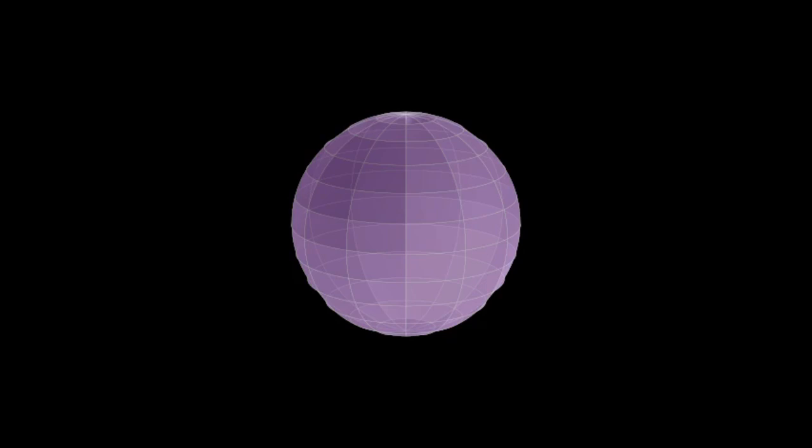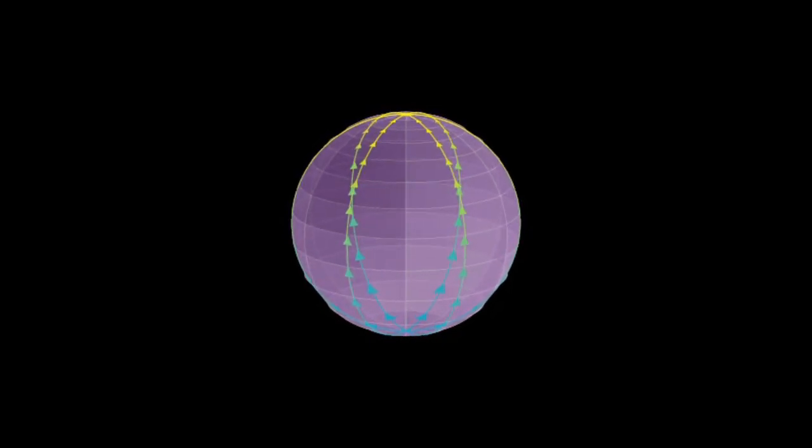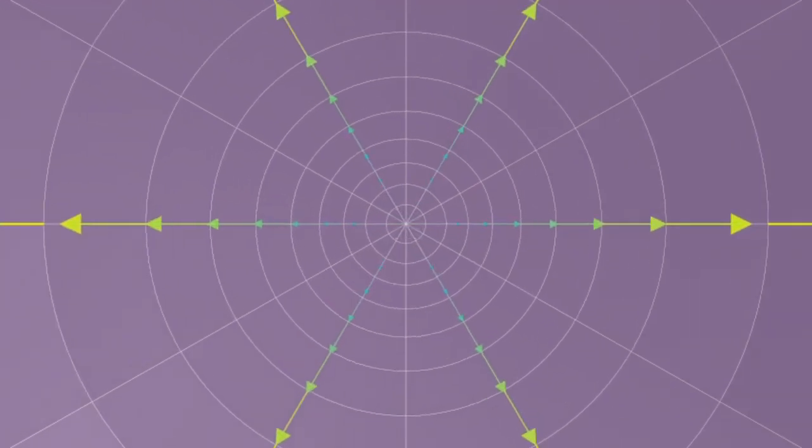For z-boosts, the orbits are lines going between the poles on the sphere, or on the complex plane, these are lines radiating outwards from the origin. Notice also that the orbits of the z-rotation and z-boosts are transverse, or at right angles to one another. This will continue to hold true for rotations versus boosts on other axes.